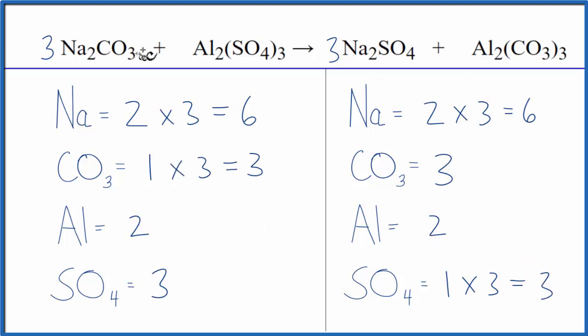This equation is balanced, so you can see by counting these polyatomic ions as just one thing, if they appear on both sides of the equation, makes it a lot easier to balance double displacement reactions. This is Dr. B with the balanced equation for sodium carbonate plus aluminum sulfate. Thanks for watching.